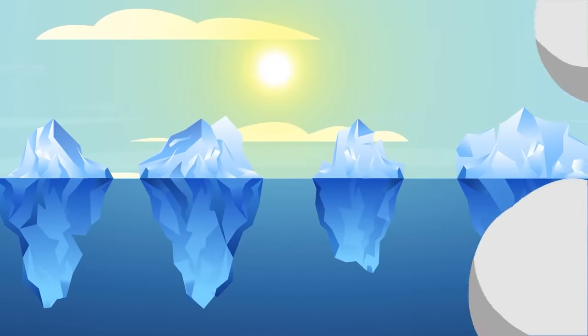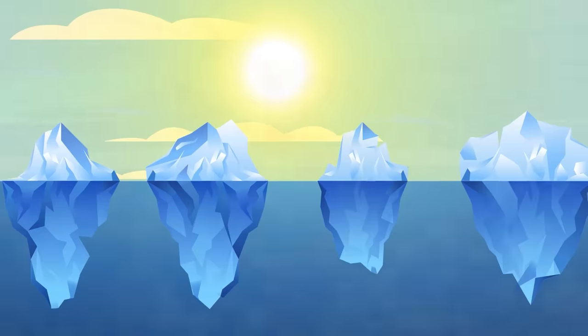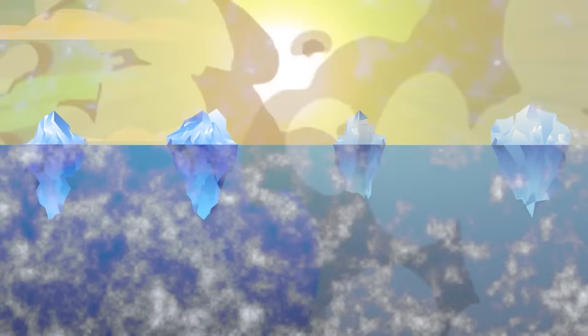The short time without an ozone layer would cause ice and snow to melt rapidly across the Earth while simultaneously boiling the ocean's water. Global temperatures would begin to increase drastically.